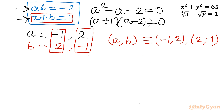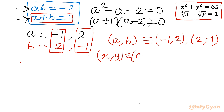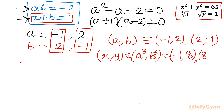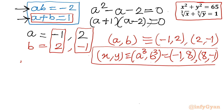We are calculating the values of x and y. Since x = a³ and y = b³: for (a, b) = (-1, 2), we get (x, y) = ((-1)³, 2³) = (-1, 8); and for (a, b) = (2, -1), we get (x, y) = (8, -1). These are the final answers for this challenging system of equations.